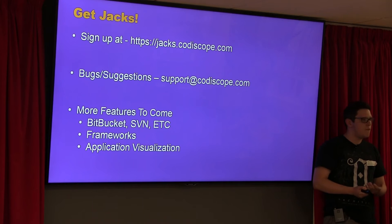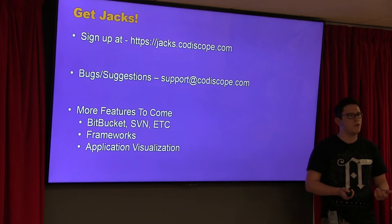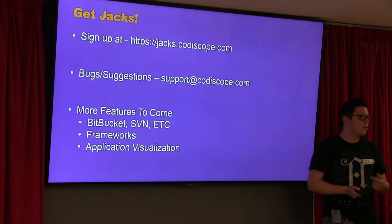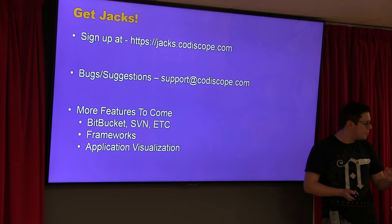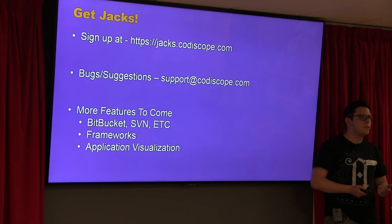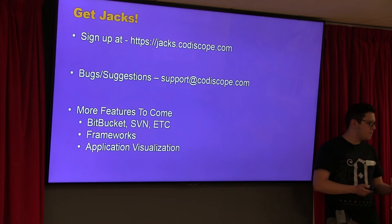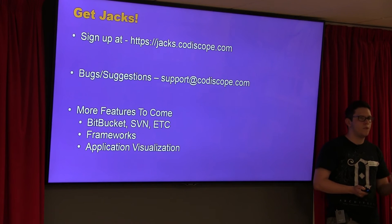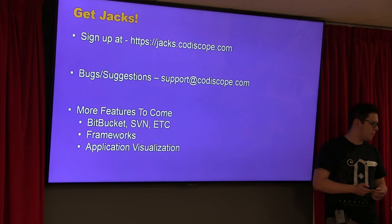That was pretty much the demo. If you want to try it out on your personal open source projects first, sign up at jacks.codascope.com. You can either authenticate through Git or create an account. There are more features to come. At the moment it only works with Git, but soon there'll be support for Bitbucket, SVN, and other version managers, as well as new frameworks like AngularJS client-side and Backbone.